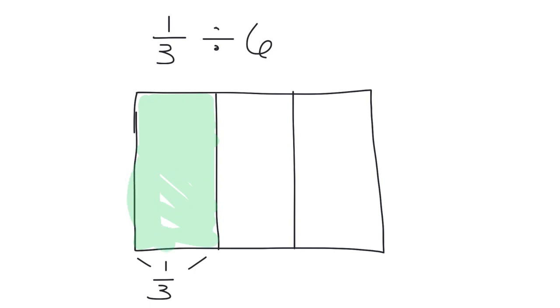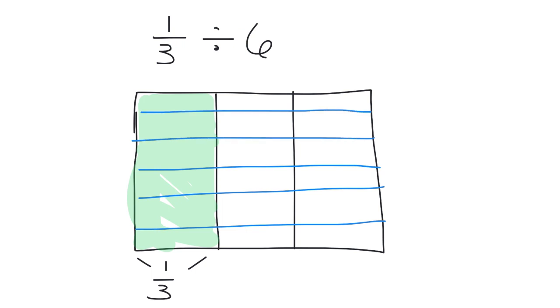And it says we're supposed to cut it into six equal parts. So there we go. That's not exactly equal but close enough. And there's my one-third cut into six equal parts. And I want to know the size of one of those little parts. Right there.